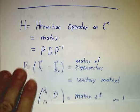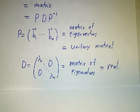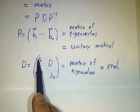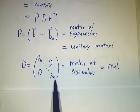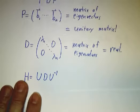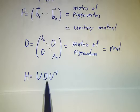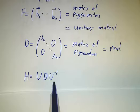And our matrix D, our matrix of eigenvalues, is real and diagonal. So that means that we can write H as unitary times real diagonal times the inverse of the unitary.